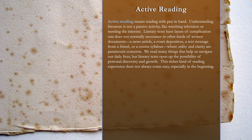So let's talk about active reading now. Active reading means reading with a pen in your hand. Understanding literature is not a passive activity like watching television or trawling the internet. Literary texts have layers of complication one does not normally encounter in other kinds of written documents like a news story, a court deposition, a text message, or a course syllabus, where utility and clarity are paramount concerns. We read many things that help us navigate our daily lives, but literary texts open up the possibility of personal discovery and growth.